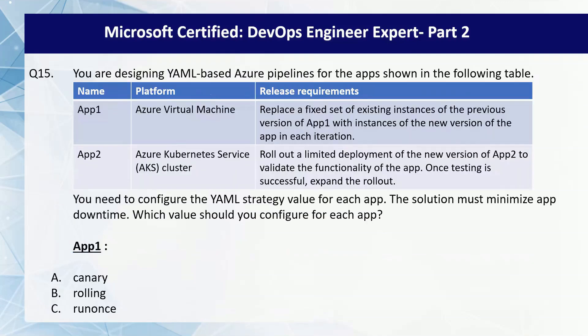Question number 15 of the series. You are designing YAML-based Azure Pipelines for two apps: App1, hosted on Azure Virtual Machine platform, and App2, hosted on Azure Kubernetes Service cluster. The release requirement for App1 is to replace a fixed set of existing instances of the previous version with instances of the new version in each iteration. The release requirement for App2 is to roll out a limited deployment of the new version to validate functionality, then expand the rollout once testing is successful. You need to configure the YAML strategy value for each app, minimizing downtime.